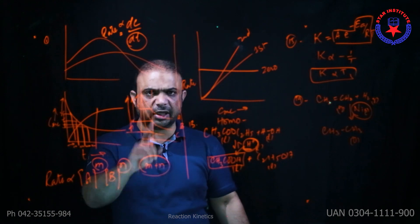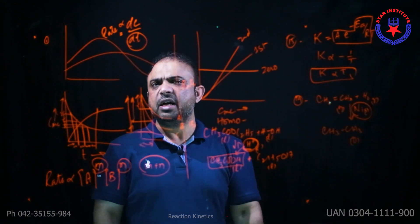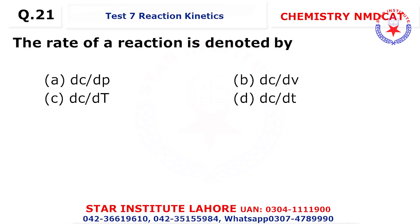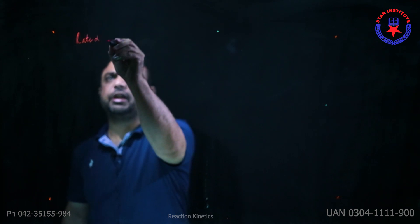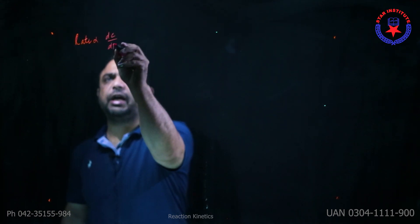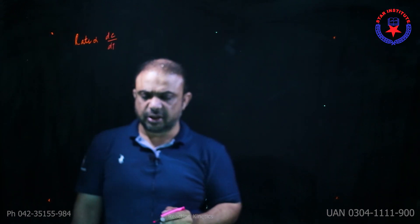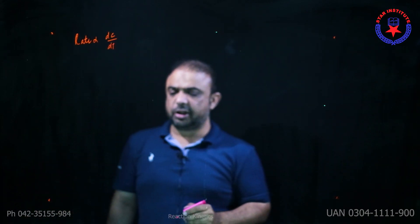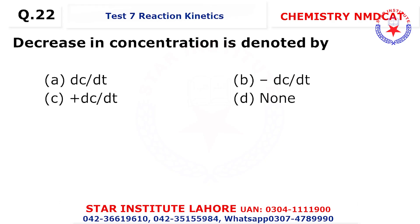Question 20: The branch of chemistry that deals with the study of the rate of a reaction is called chemical kinetics — defined as the branch dealing with reaction rate, its mechanism, and the factors upon which it depends. Question 21: The rate of reaction is denoted by dc/dt. Rate is equal to dc/dt, where k is constant.